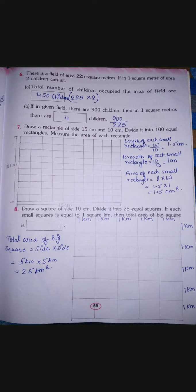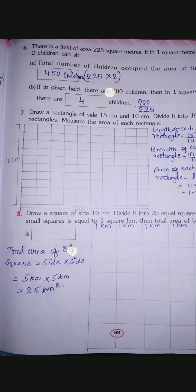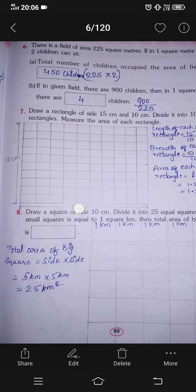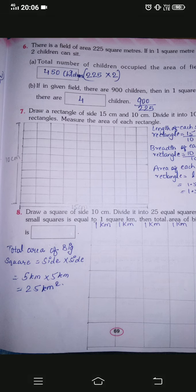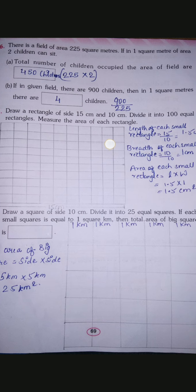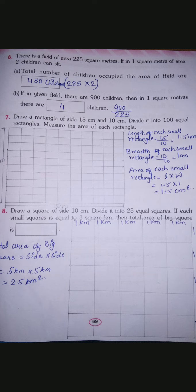What this question means is you have to draw a rectangle. The length is given as 15 centimeter and breadth is given as 10 centimeter. I have drawn a rectangle here — 15 centimeter is the length and 10 centimeter is the width. We have done the drawing. The second part of the question is to divide it into 100 equal rectangles.